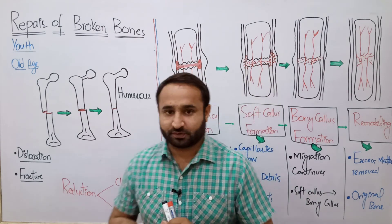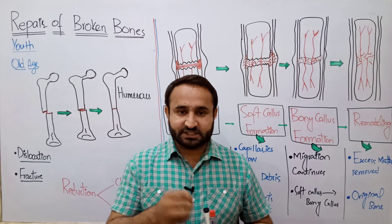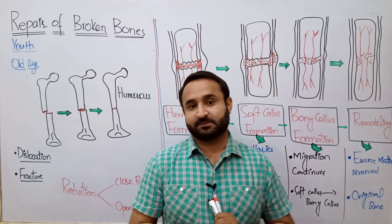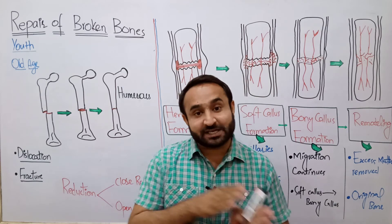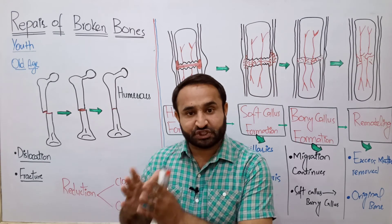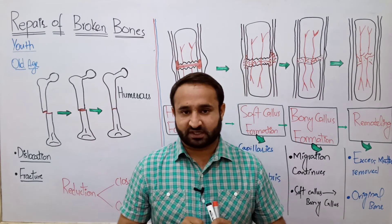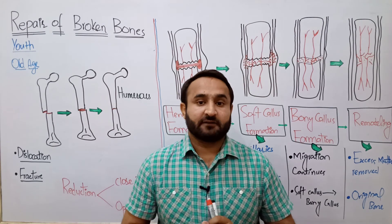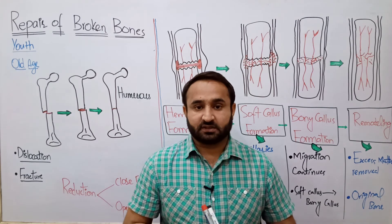When a bone breaks, the process of repair is called reduction. In English, 'reduce' generally means to lessen; in chemistry, reduction and oxidation have their own meanings. But in biology, reduction means to bring back — to bring back to the original form and original shape. So reduction means realignment of the broken bones. Restoration of the dislocated joint or fractured bone is called reduction in biology.